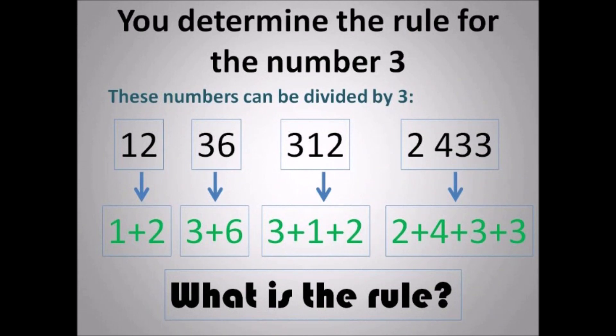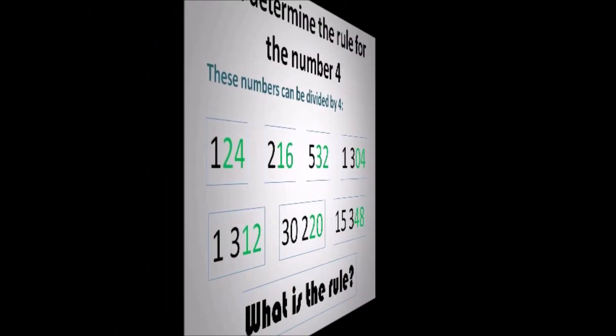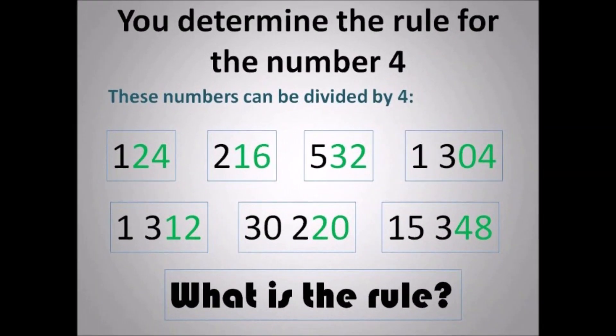You determine the rule for the number 3. These numbers can be divided by 3: 12, 36, 312, 2433. I have an arrow leading down. 12 is 1 plus 2. 36 is 3 plus 6. 312 is 3 plus 1 plus 2. 2433 is 2 plus 4 plus 3 plus 3. What is the rule?